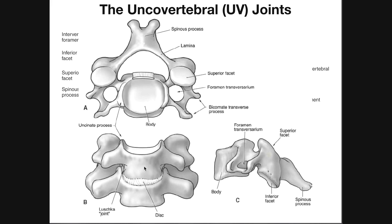Looking at two vertebrae stacked on top of one another, on the lower vertebra we can see the uncinate process on the patient's left and right. These uncinate processes extend upwards and can articulate with the inferior part of the vertebral body above on either side.